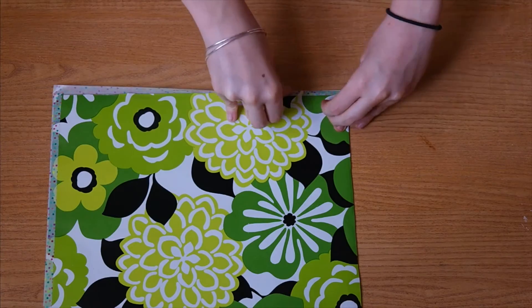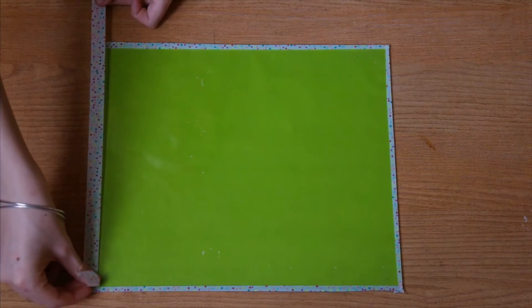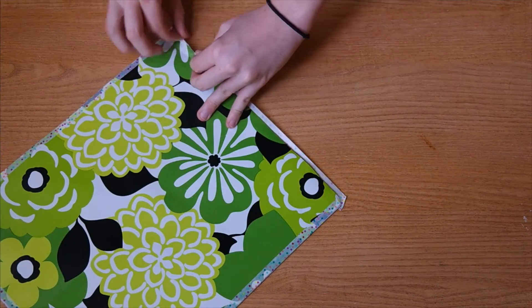I'd recommend using a pretty simple design or a solid colored paper so you can read it when you write on your glass. Anyway so tape all four sides of your paper to the glass.